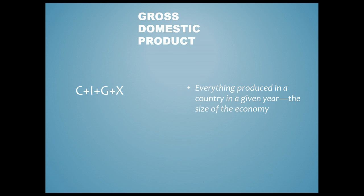Gross Domestic Product, referred to as GDP, is the most basic economic indicator — you've probably heard of it before. It's everything produced in a country in a given year, and it really measures the size of the economy. If you could put an economy on a bathroom scale, that's what GDP would be. It's measured in dollar amounts — the US GDP at the time was about 15.7 trillion dollars.